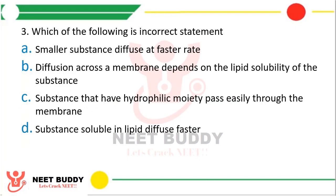Question 3: Which of the following is an incorrect statement? Option A: smaller substances diffuse at faster rate. Option B: diffusion across the membrane depends on lipid solubility of the substance. Option C: substances that have hydrophilic moiety pass easily through the membrane. Option D: substances soluble in lipid diffuse faster. The correct answer is option C. Hydrophilic substances — hydro means water, philic means love — find it difficult to pass through a lipid membrane and take a longer time. Substances which are lipid soluble pass through the membrane easily.